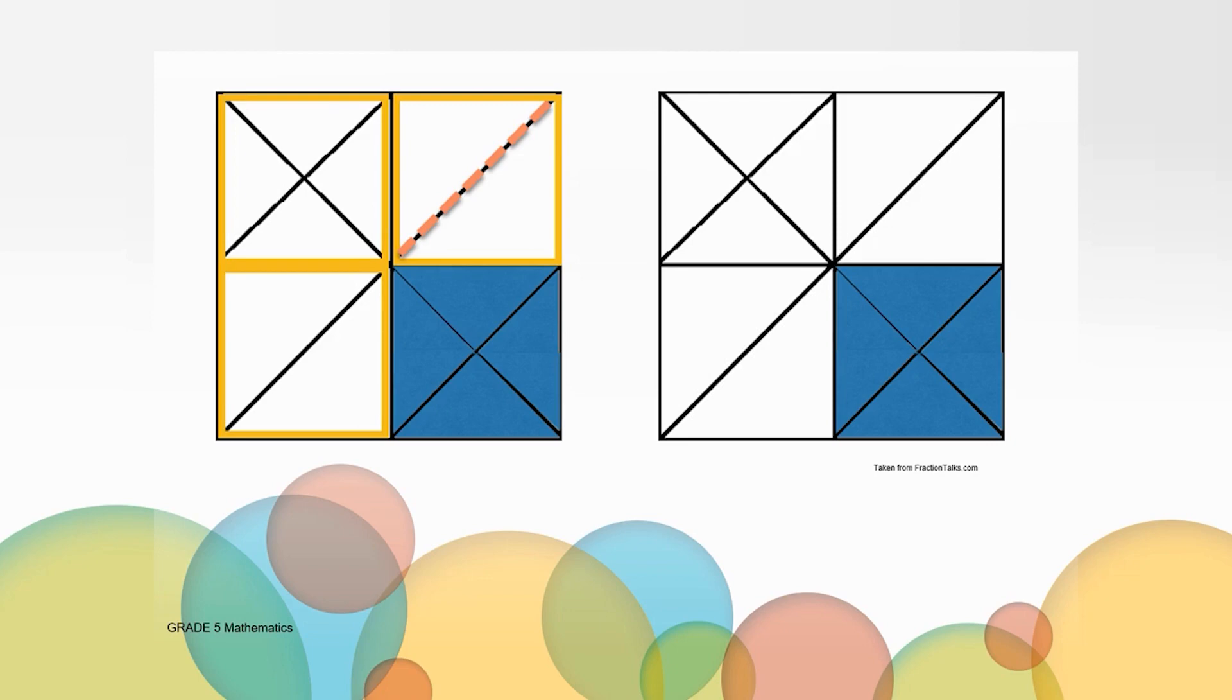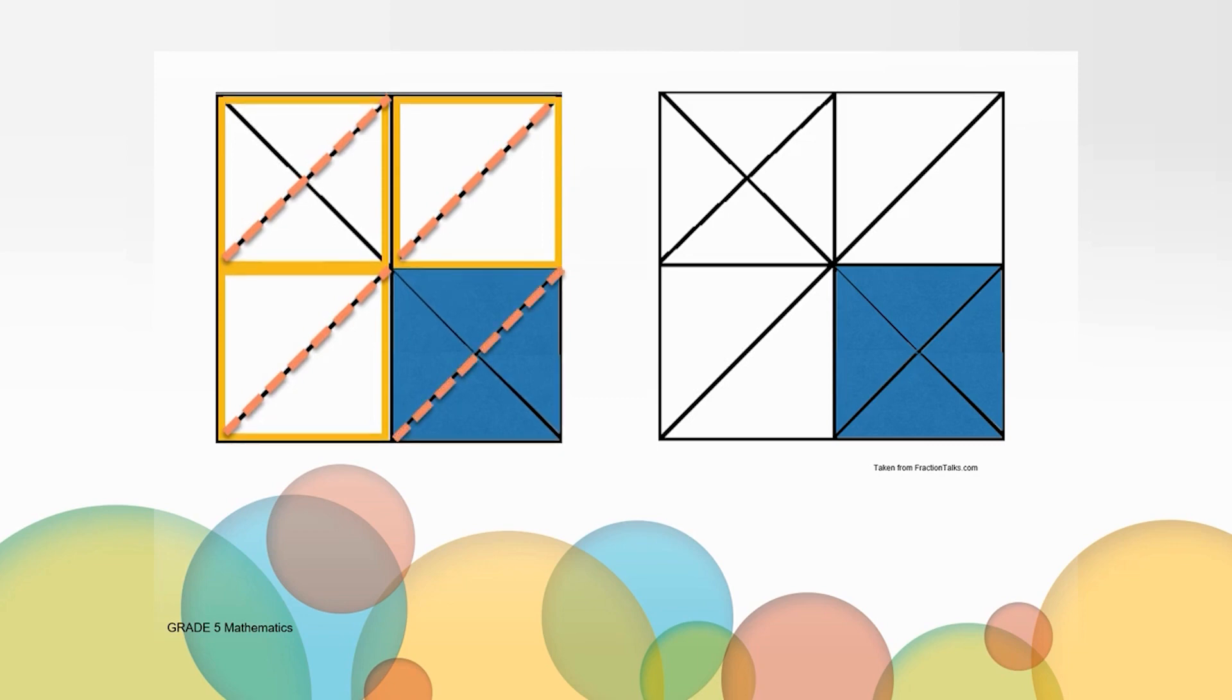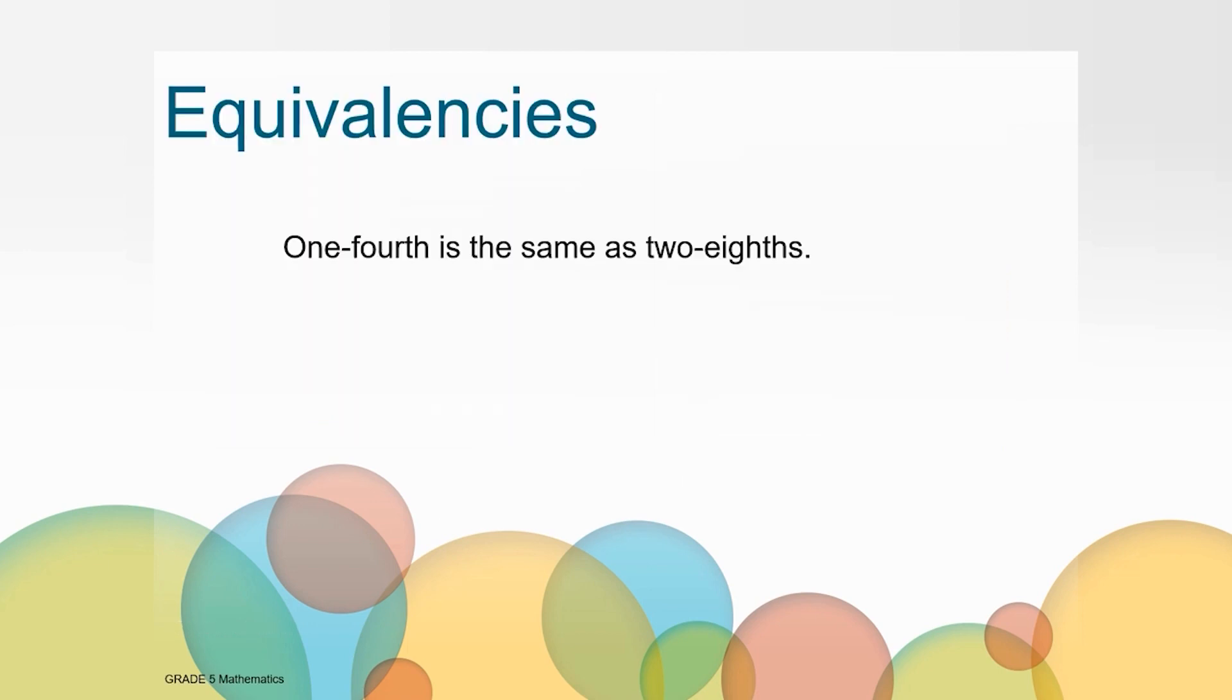Another way to think about it is by breaking up the four squares in half with a diagonal, like this. Now I can see that I have eight triangles within the entire square. How many of those triangles are blue? Two-eighths are shaded blue. Does this thinking match your thinking? What we just showed on the last two explanations are examples of equivalencies. When something is equivalent, we mean that the values are the same, but that the representation may look different.